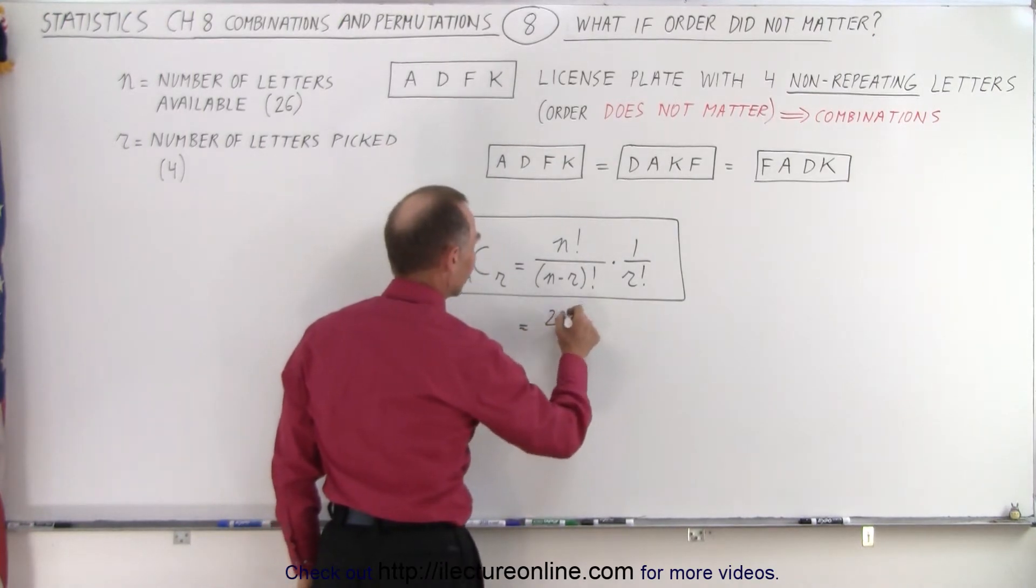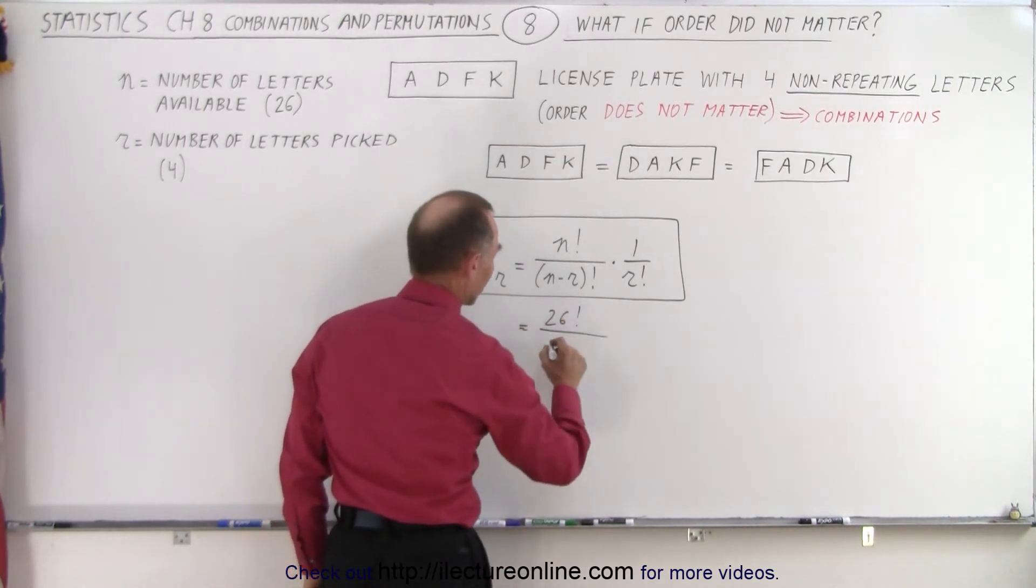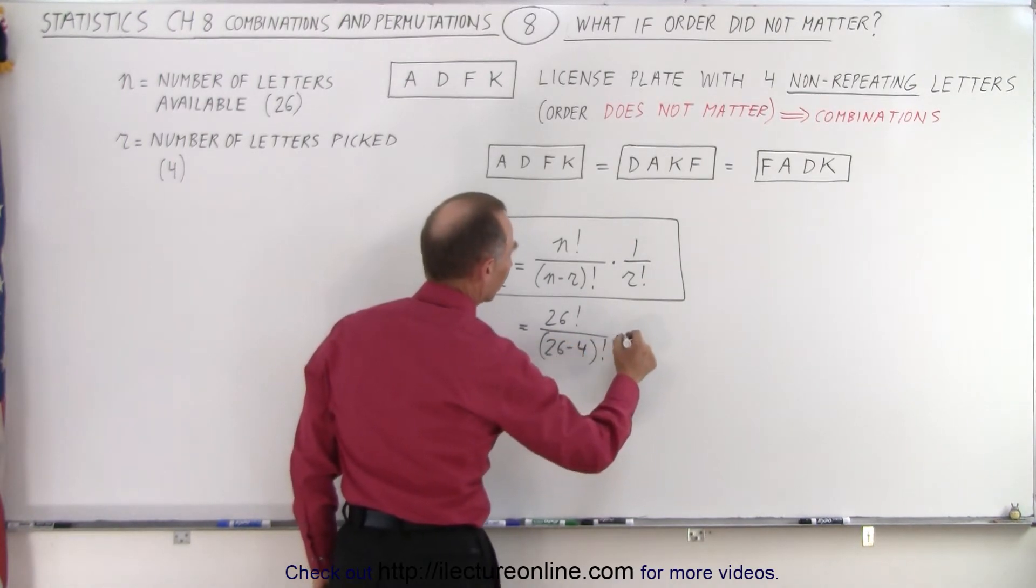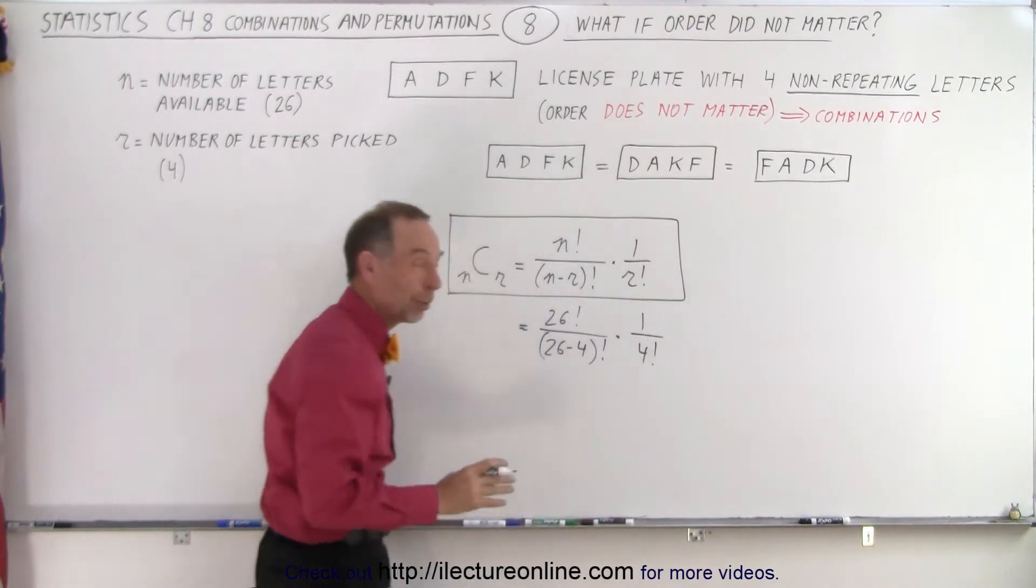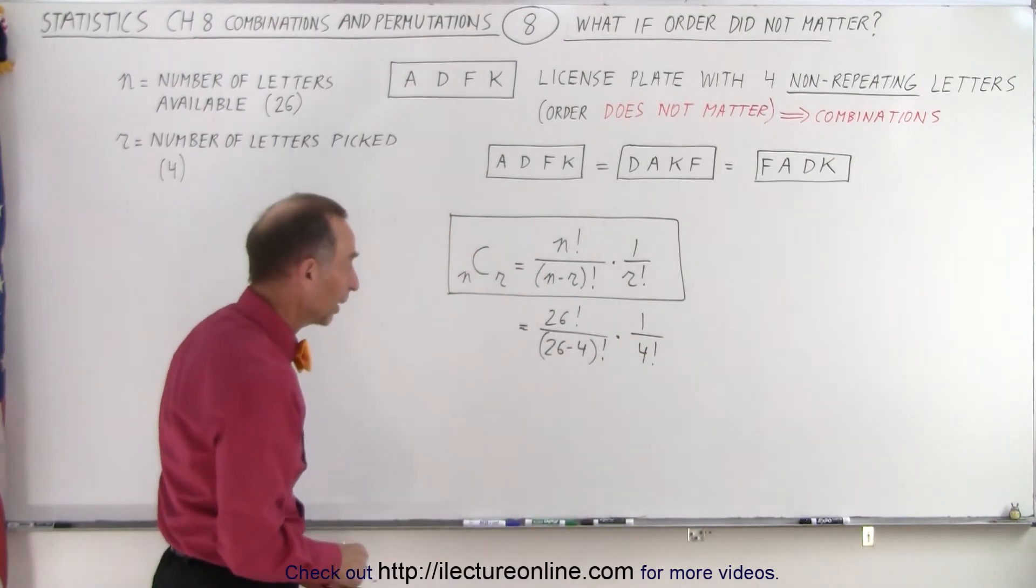So this would be equal to 26 factorial divided by 26 minus 4 factorial and then multiply times 1 over R which is 4 factorial, the number of characters in the license plate.